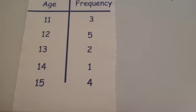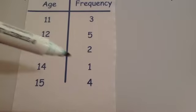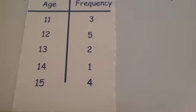Here's an example of a frequency table that we're going to find the median for. You've got 3 11 year olds, 5 12 year olds, 2 13 year olds, 1 14 year old and 4 15 year olds.